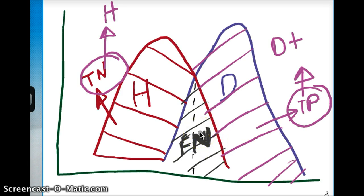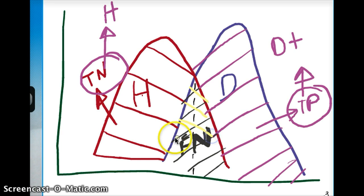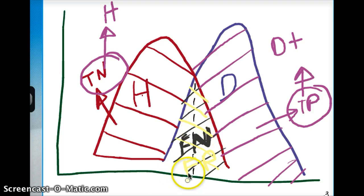What about false positive? When we are talking about the healthy graph, this shaded area is going to be our false positive. False positive means that they're showing up as if they're diseased — they're showing up as positive — but really they're not. They're healthy.